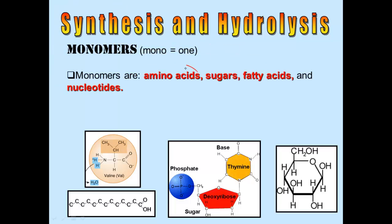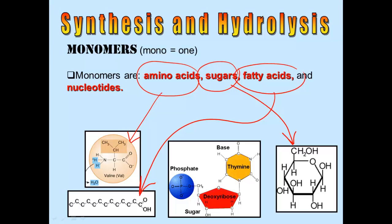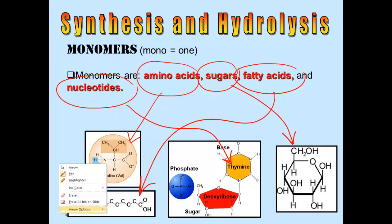The monomers we're going to learn this year are amino acids. This is a picture of an amino acid. We're going to learn about sugars, which is a type of carb. This is a simple sugar. We're going to learn about fatty acids. This is a fatty acid. And we're going to learn about nucleotides, those letters A, C, T, and G. This one is T. And nucleotides build DNA and RNA.